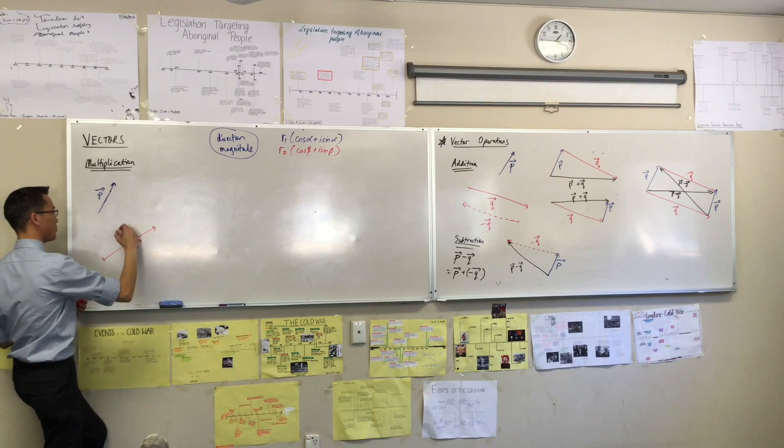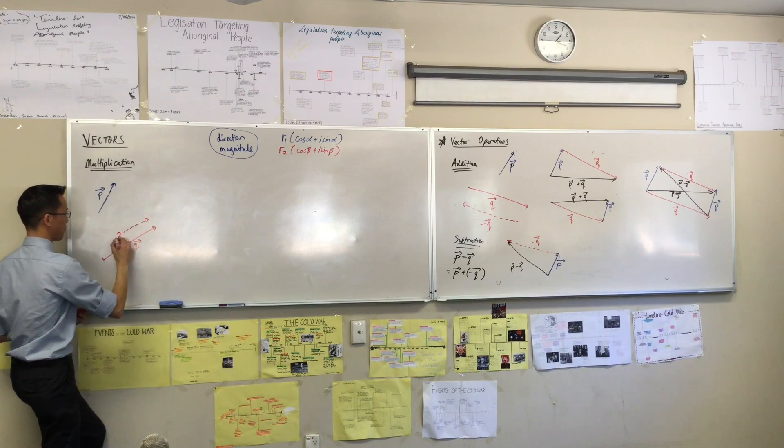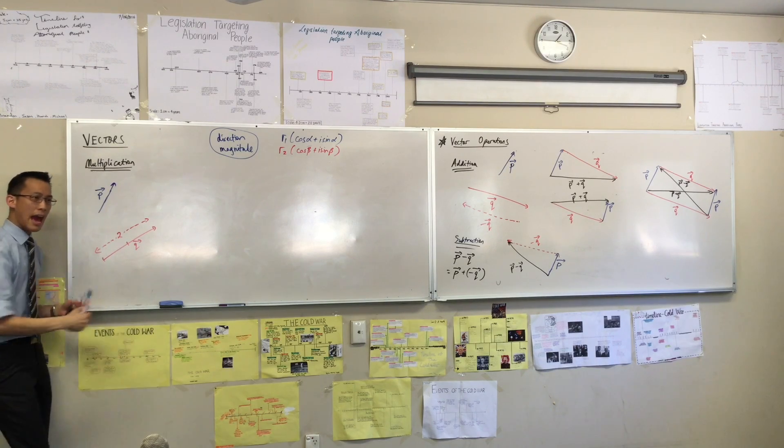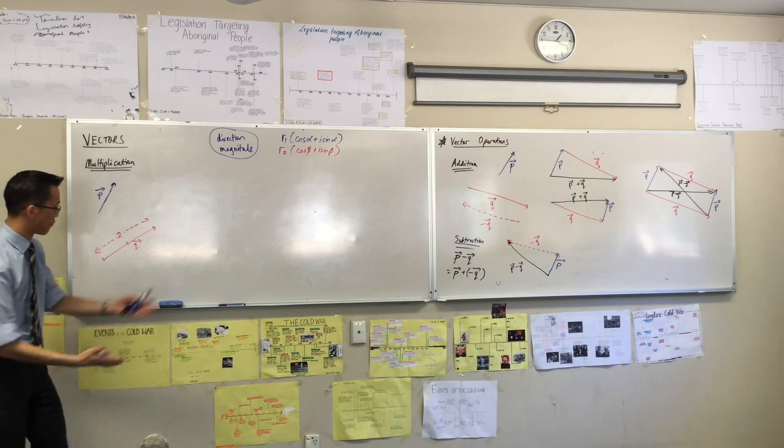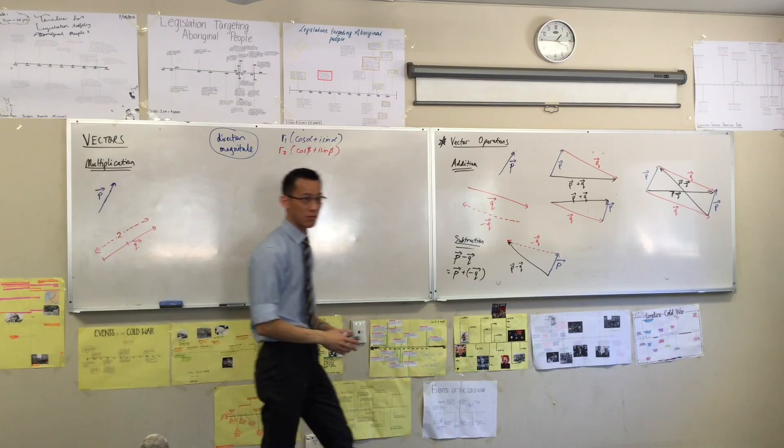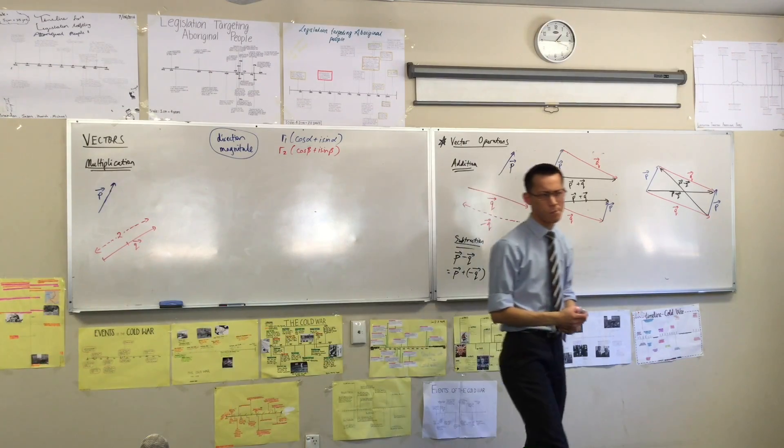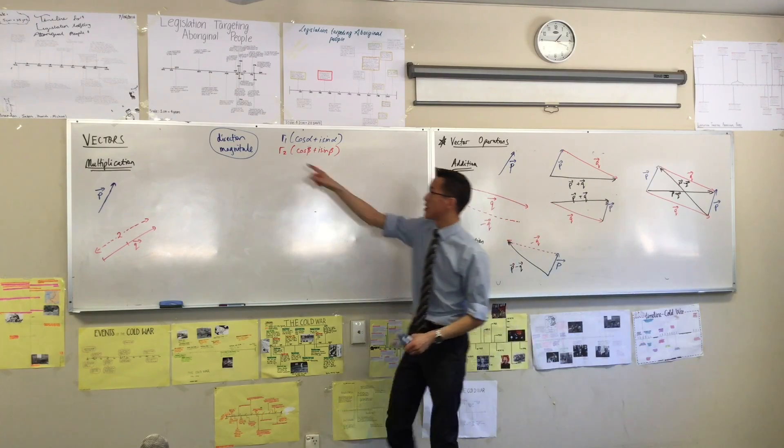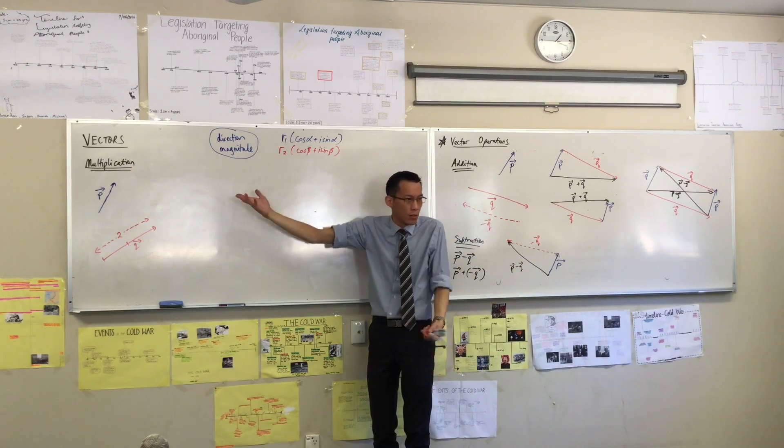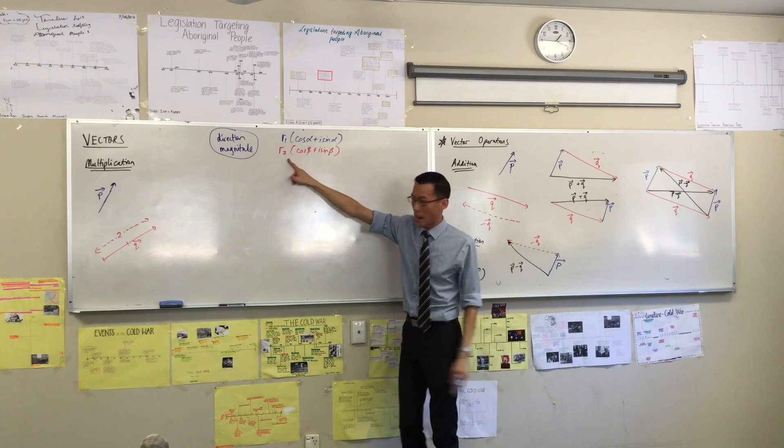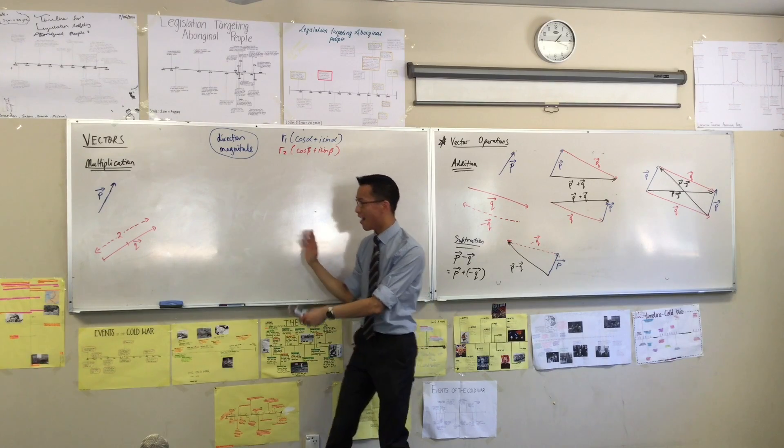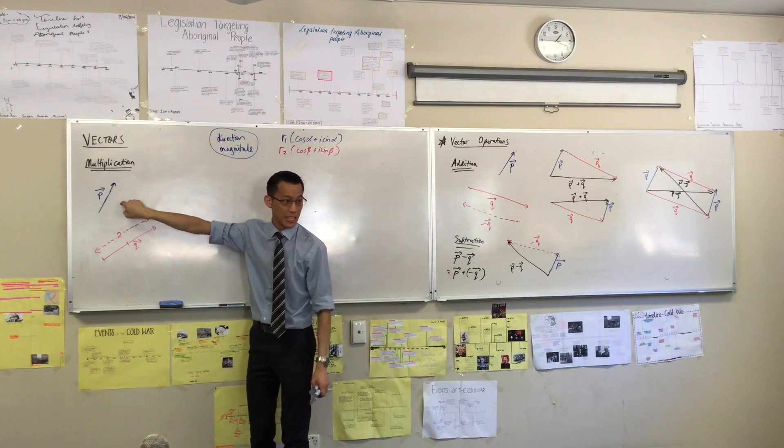then when I multiply p times q, how would you describe the length of my new product vector pq? How would you describe it? It's going to be, well, you're going to take whatever this modulus was, I haven't defined what that is, who knows what it is, and I'm going to multiply it by, in this case, two. So whatever my new vector is going to be, I just know it's going to be twice as long as this vector.